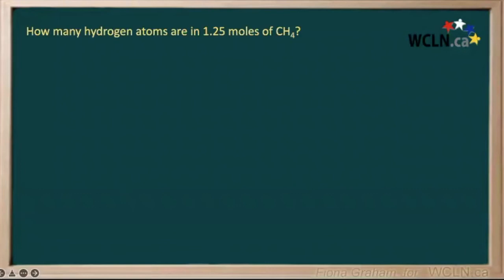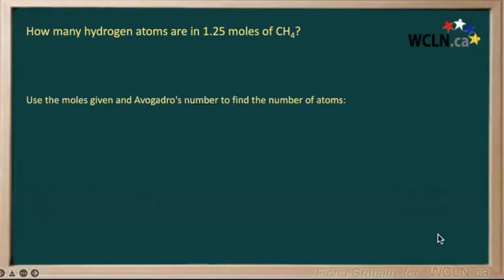The question is asking us how many hydrogen atoms are in 1.25 moles of methane. We're going to use the number of moles that they gave us, and Avogadro's number, to find the number of atoms.